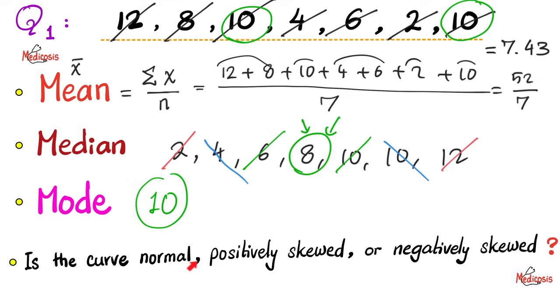Now you tell me whether this curve is normally distributed, positively skewed, or negatively skewed. What do you think? Well, back to the story. You write down me, me, mo. Mean, median, mode. The mean is 7.43. The median is 8. The mode is 10. So in this case, the mode is the greatest one, followed by the median, followed by the mean. So I use the less than sign, making this a negatively skewed curve.